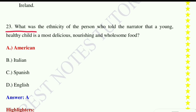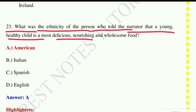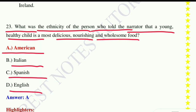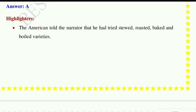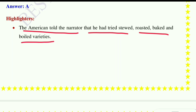Question number twenty-three: What was the ethnicity of the person who told the narrator that a young healthy child is the most delicious, nourishing, and wholesome food? Option A: American, option B: Italian, option C: Spanish, option D: English. The correct answer is American. The American told the narrator that he had tried stewed, roasted, baked, and boiled varieties.